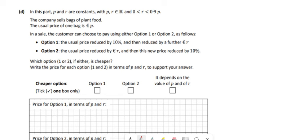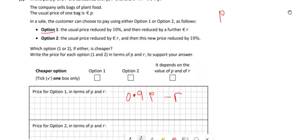Right, so part d then. So you've got two options. P is basically the price of the food, plant food. So for option A, if you look at option A, option A is the usual price reduced by 10 percent. So the usual price reduced by 10 percent would be 10% of p, so p minus 10% of p, so that's just going to be 0.9p. That's 10% reduced off p, and then reduced by a further r, so we take away r then as well.